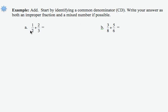When we look at the first fraction, 1 half, plus the second fraction, 2 thirds, the denominators are not the same, so we cannot combine them as they are.